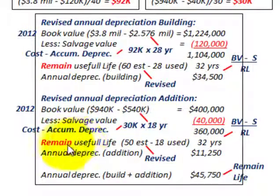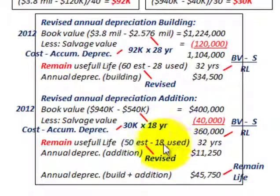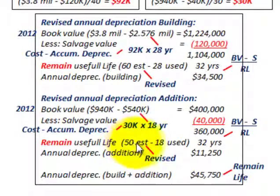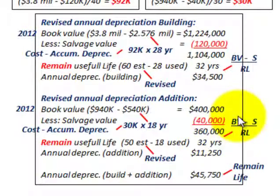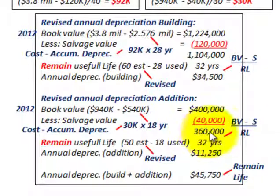For the remaining useful life on the addition: we originally estimated 30 years but revised it to 50 years, and we've used 18 years. So the remaining useful life under the new estimate is 50 years less 18 years used, giving 32 years remaining. We take book value less salvage value of $360,000 divided by the remaining life of 32 years.